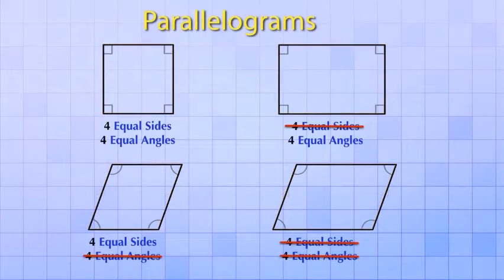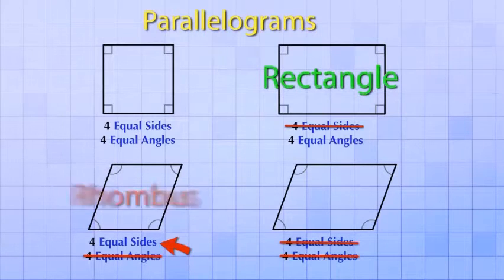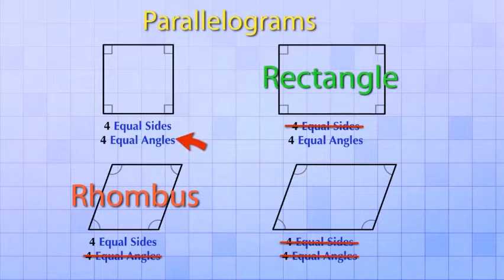It's just that we have special names for them if their angles are all equal, a rectangle, or if their sides are all equal, a rhombus, or if both their sides and their angles are all equal, a square.